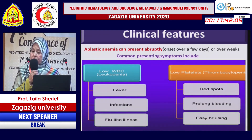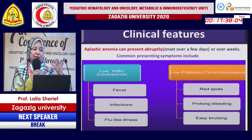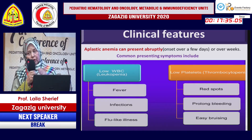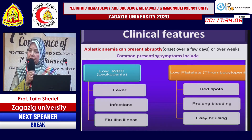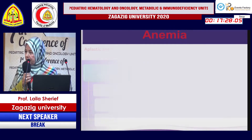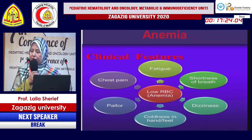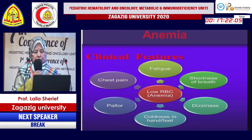Apart from the clinical presentations, we have three main problems. With neutropenia, the patient can present with fever and recurrent infections. With thrombocytopenia, the patient can present with bleeding manifestations affecting the skin or mucosa. With anemia, manifestations include fatigue and easy fatigability.